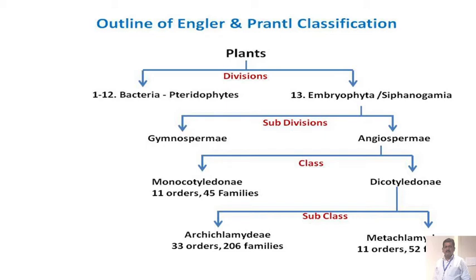Angiospermia is divided into two classes: the Monocotyledons and Dicotyledons. In Monocotyledons, 11 orders and 45 families are included. In Dicotyledons, they are also divided into two subclasses: the Archichlamydeae and Metachlamydeae. In Archichlamydeae, there are 33 orders and 206 families. And in Metachlamydeae, 11 orders and 52 families are included.